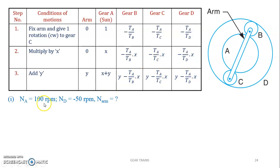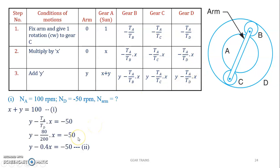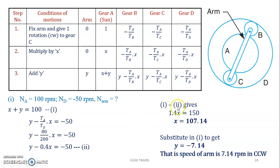Now go to the question. Gear A rotates at 100 rpm clockwise and gear D rotates at 50 rpm counterclockwise — so ND is taken as negative. Speed of A is given by X plus Y. Speed of D is given by its expression. Substituting, X plus Y equals 100 and we get ND equal to minus 50. Solving equations 1 and 2, we get X, then substitute back to get Y. Speed of R equals Y, which is minus 7.14 rpm — meaning 7.14 rpm counterclockwise, because the answer is negative.